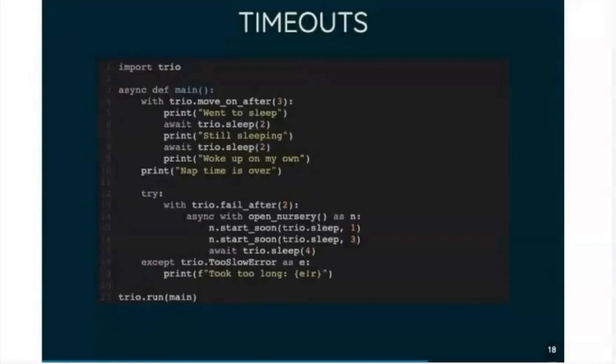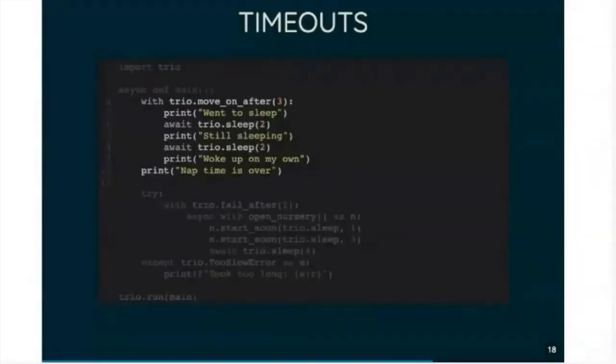With Trio, you use the async block. So you've got the first thing, first bit of code here is Trio.moveOnAfter with three seconds. So the entire body of that block will take at most three seconds. So here we've got four seconds worth of stuff. We go to sleep. We wait a little bit. We're still sleeping. We wait a little bit and then we wake up on our own. After three seconds, that block will be cancelled.